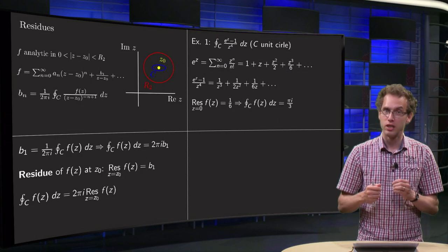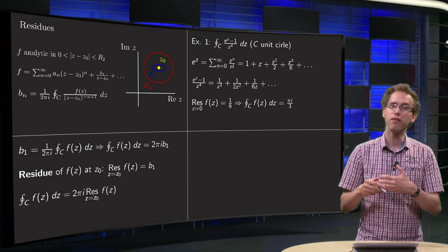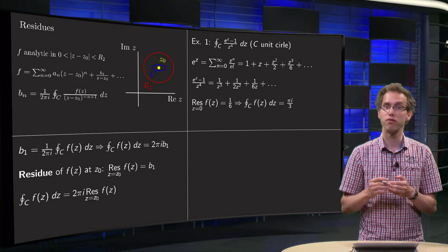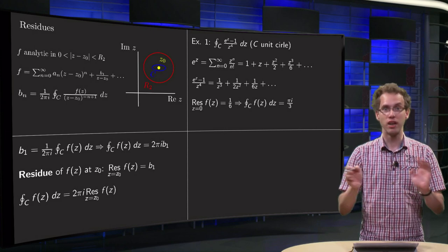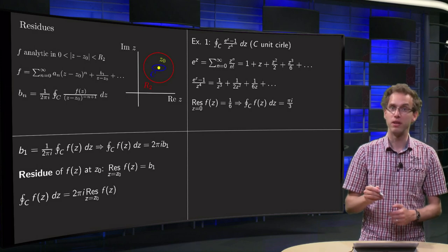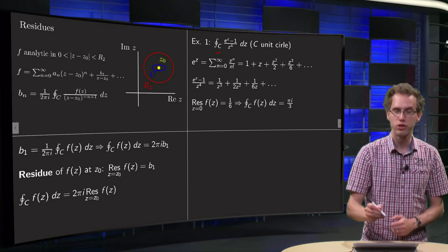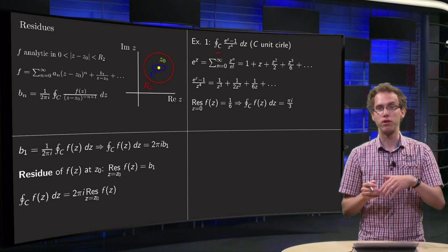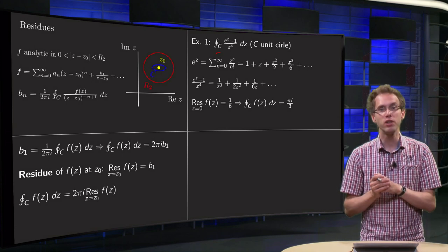Now, we can use that if we have, for example, the function (e^z - 1)/z⁴. f(z) is analytic everywhere except at z equals 0. Now, our integral will be along C, the unit circle, so circle radius 1, traversed in positive direction, once around the origin.